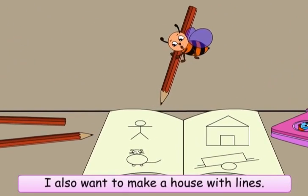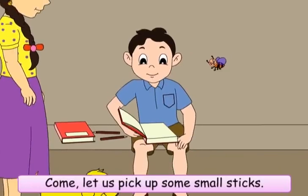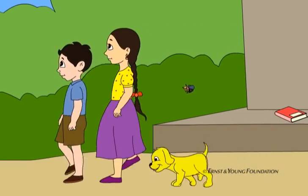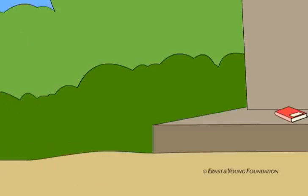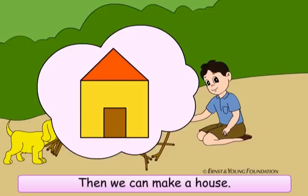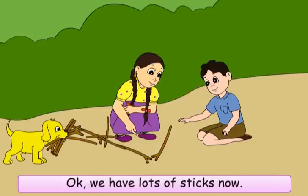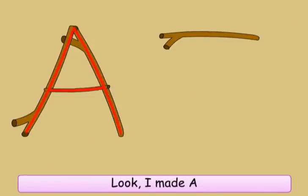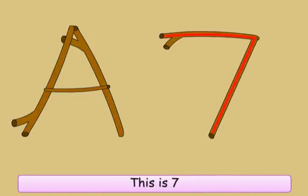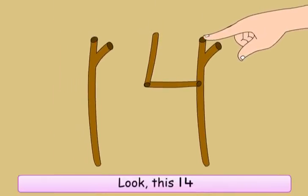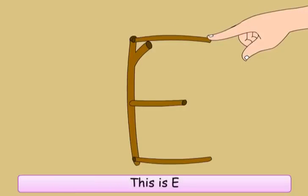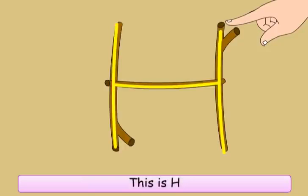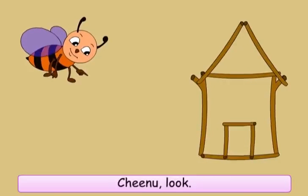Chinu says: 'I also want to make a house with lines. Come, let us pick up some small sticks. Then we can make a house.' They gather sticks. The children begin forming shapes: 'Look, I made A. This is 7. This is 14. This is E. This is H.' Then: 'Chinoo, look — I made a house!'